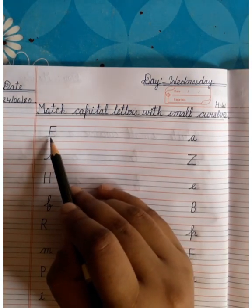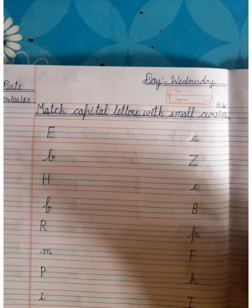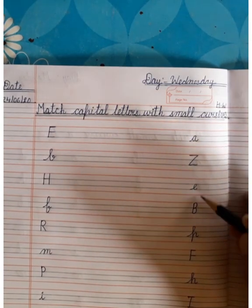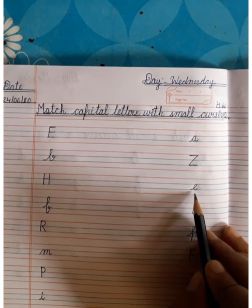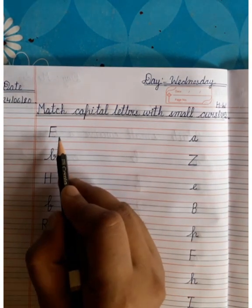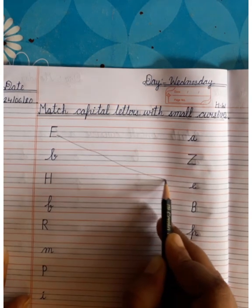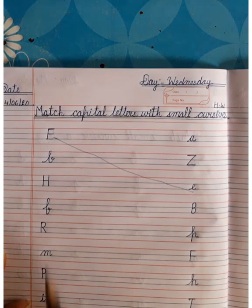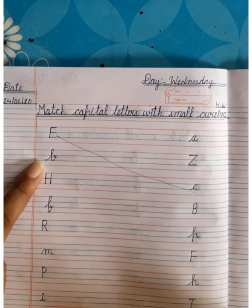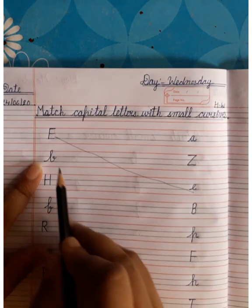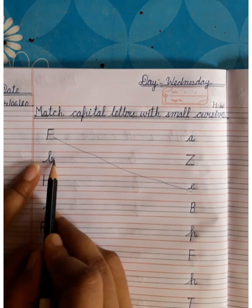This is capital letter E. And tell me, in this side where is small e? This is small e. Match it. Okay, now next. This is small b, and in this side where is capital letter B? This is capital letter B. Match this.